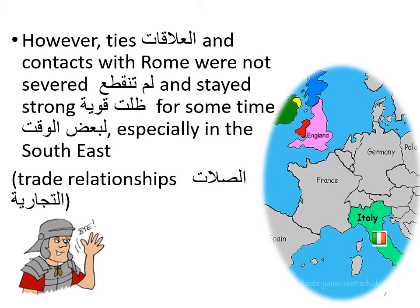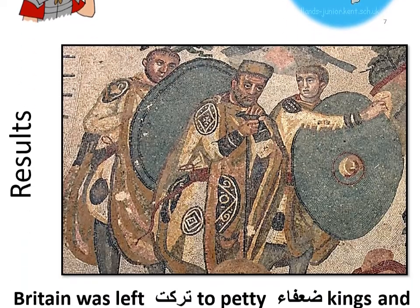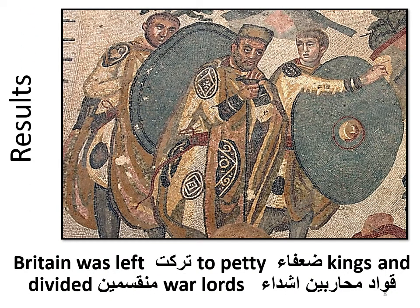The Roman Empire was falling apart. However, ties with the Roman Empire — especially ties with Rome, now present in Italy — were not severed. Contacts stayed very strong for some time, especially in the south-eastern part of Britain, because of trade, communications, and contacts.